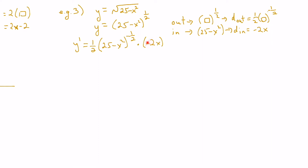The 2 in the numerator and the 2 in the denominator cancel, leaving negative x on top. Shifting the 25 minus x squared to the negative 1 half to the denominator gives us the square root of 25 minus x squared on the bottom. The final answer is negative x over the square root of 25 minus x squared.